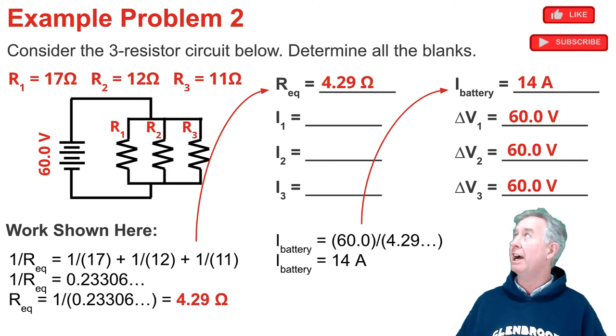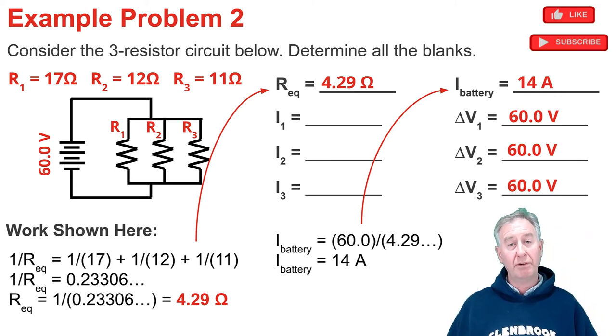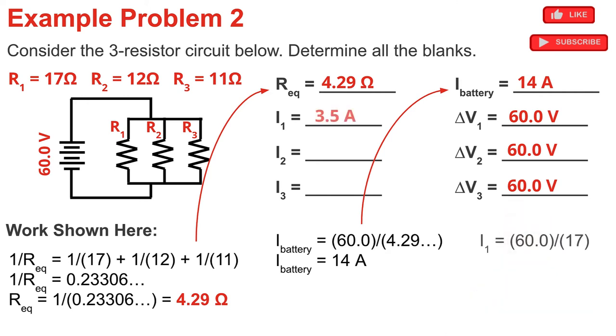Now I'm ready to calculate I₁, I₂, I₃. To calculate I₁, I take the voltage drop across resistor 1, and I divide it by the resistance of resistor 1. That's 60 volts divided by 17, and it comes out to be 3.5 amps. I do the same for resistor 2. It's 60 amps divided by the 12 ohms, comes out to be 5 amps. And finally for resistor 3, the current is 60 volts divided by 11 ohms. That's 5.5 amps. Now I'm going to do a check. Is the sum of the branch currents equal to the current within the battery? They should be. So 3.5 plus 5.0 plus 5.5 sum to 14 amps. And that's the current in the battery.